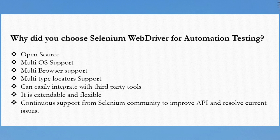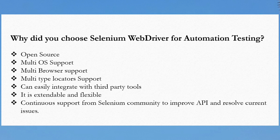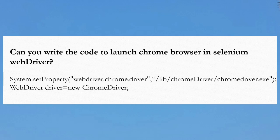The next question is: why do you choose Selenium WebDriver as an automation tool? There are a number of reasons. First, it is an open source tool — you can use any version of Selenium free of charge. It supports multi-browser and multi-operating system support. It provides a lot of locators to find web elements; if one is not working you can use another. It is extensible and flexible, supports easy integration with third-party tools, and has continuous support from the Selenium community to improve the API and resolve issues.